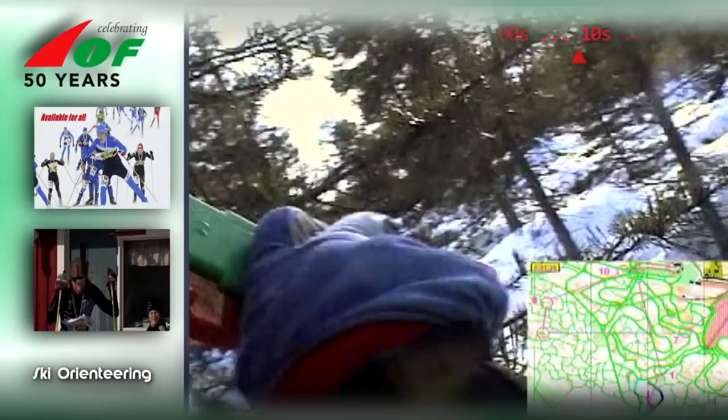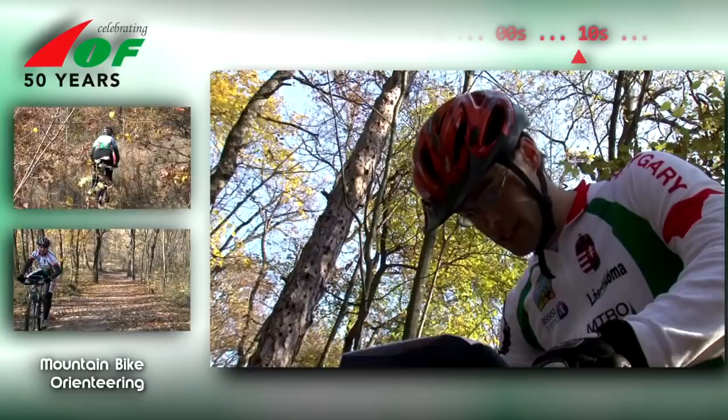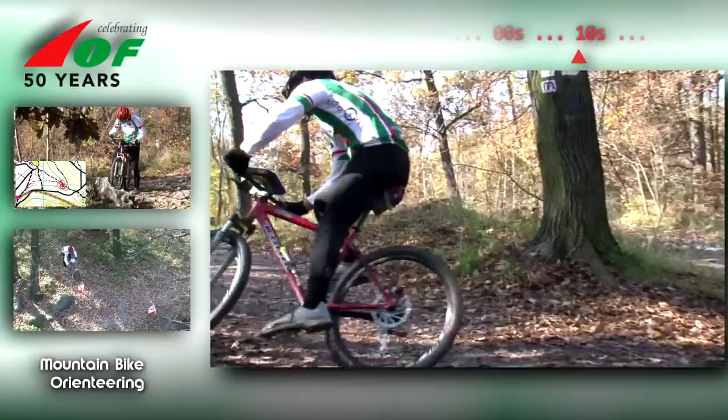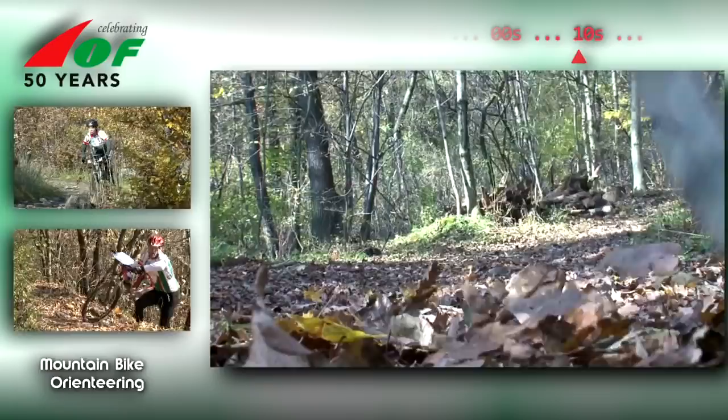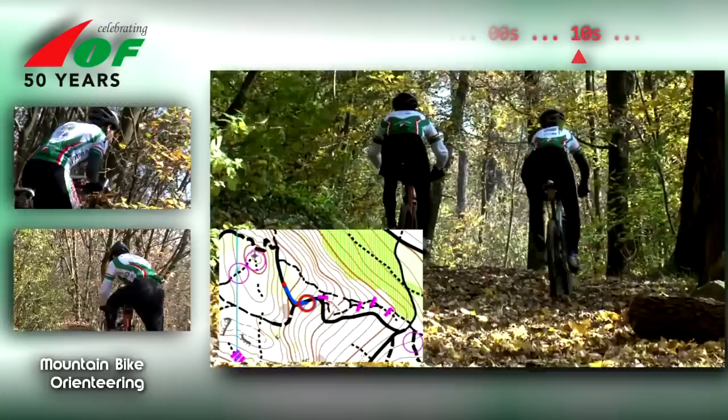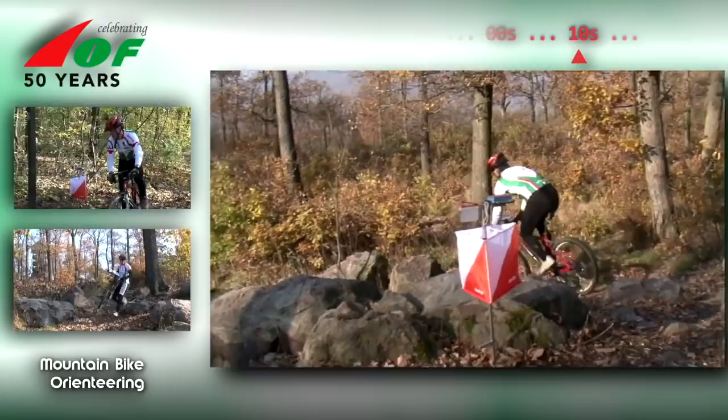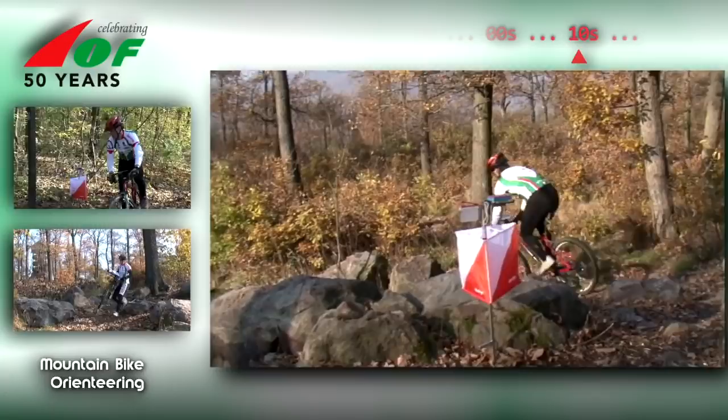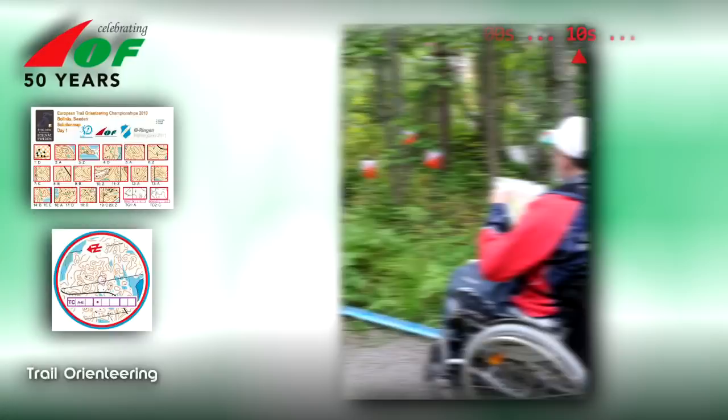Mountain Bike Orienteering is the fastest growing IOF discipline at the moment, with tracking to be used for the first time at the World Championships in Italy. Trail Orienteering has classes for both disabled and able-bodied athletes, and World Championships in Trail Orienteering have been held since 2004.